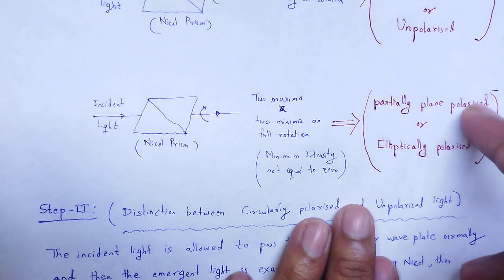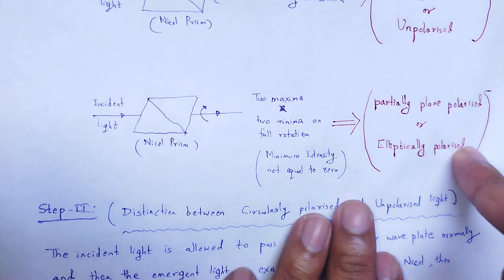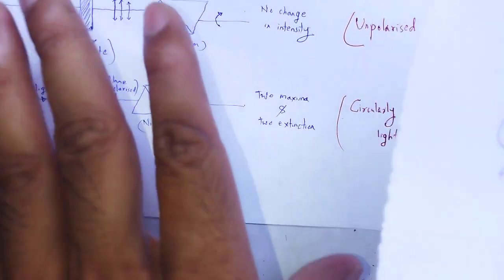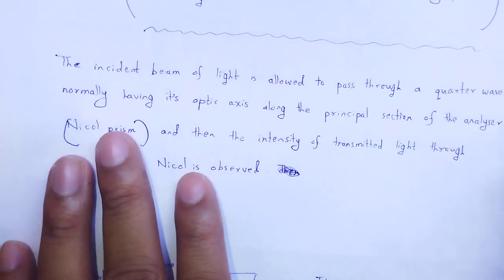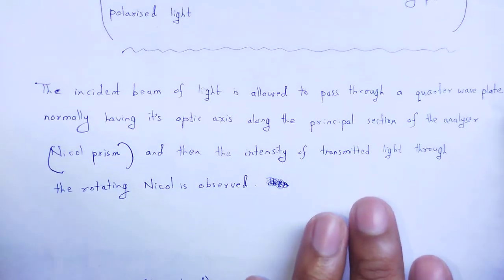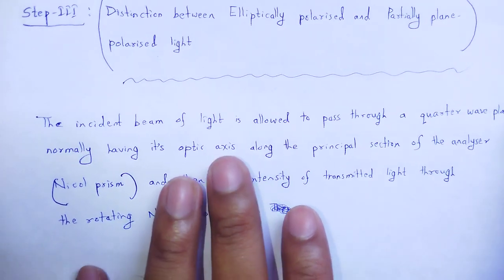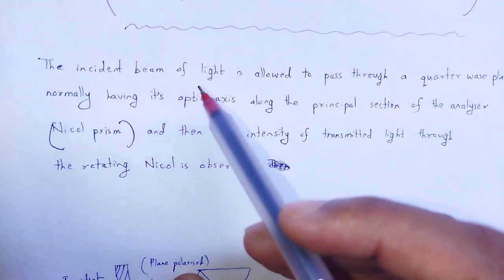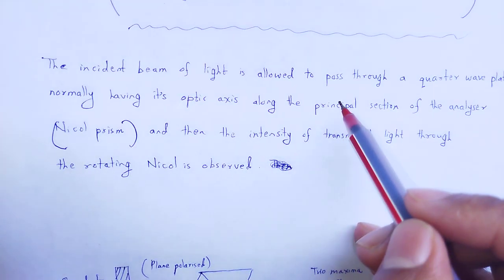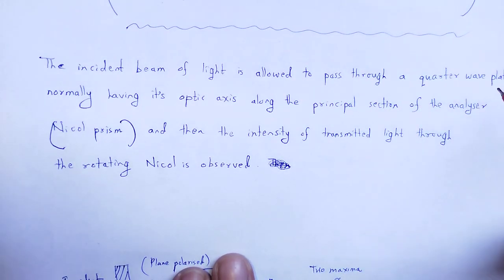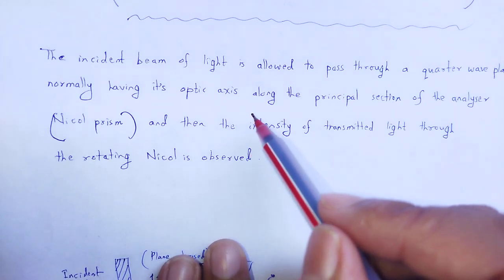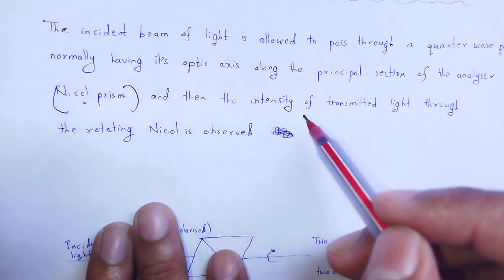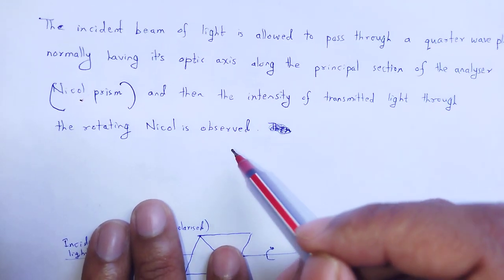Next, partially plane polarized and elliptically polarized — how to distinguish these two. Distinction between elliptically polarized and partially plane polarized light. The incident beam of light is allowed to pass through a quarter wave plate normally, having its optic axis along the principal section of the analyzer. The analyzer here is the Nicol prism. Then the intensity of transmitted light through the rotating Nicol prism is observed.